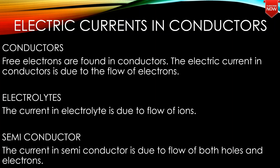Free electrons are found in conductors. The electric current in conductors is due to the flow of electrons. In electrolytes, the current is due to the flow of ions. In semiconductors, the current is due to the flow of both holes and electrons.